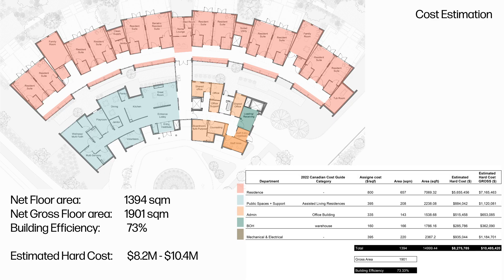Overall, the net area of the building is 1,395 square meters with a gross floor area of 1,900 square meters, resulting in a 73% efficiency. I also conducted an estimate of the hard cost based on data from the 2022 Canadian Cost Guide. For this building, the cost could go up to $10.4 million.